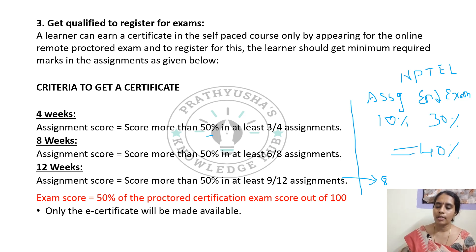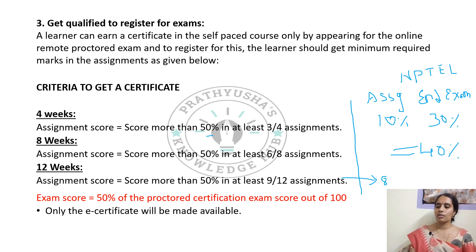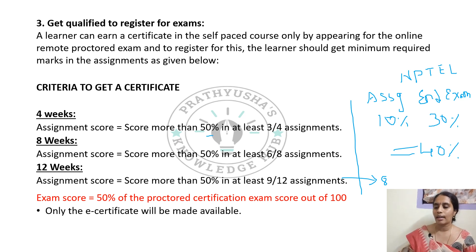For the end exam in normal NPTEL, 30% of marks (out of 75) is considered. For the self-paced NPTEL exam, 50% of marks out of 100 is required. To summarize: for self-paced, you need 50% in assignments (best of 3 for 4-week, best of 6 for 8-week, best of 9 for 12-week) and 50% in the end exam. Only then will you qualify and receive the certificate.